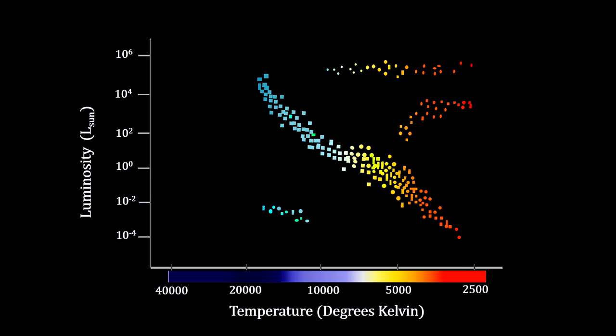Thus, the diagonal line on the HR diagram represents the main sequence for stars burning hydrogen.